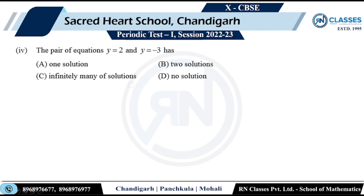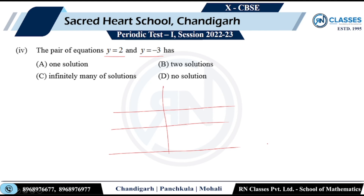The next question gives a pair of equations. These two lines are easy to visualize. Y = 2 means the y-coordinate is always 2, so the line is parallel to the x-axis. Y = -3 means the x-coordinate is always -3. These two lines are parallel and will never meet, so there is no solution. Option D is correct.